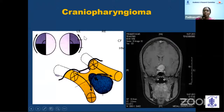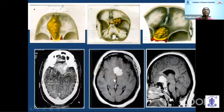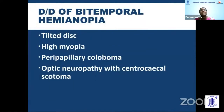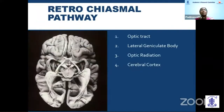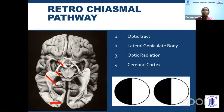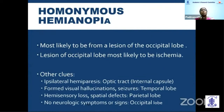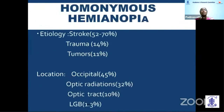Types of meningiomas causing visual field effects include olfactory meningioma, tuberculum sellae, and sphenoidal meningiomas, all causing bitemporal hemianopia. Differential diagnosis of bitemporal hemianopia includes tilted disc, high myopia, peripapillary coloboma, and optic neuropathy causing central scotoma — but none of these respect the vertical meridian and they remain static over time. The retrochiasmal pathway includes the optic tract, lateral geniculate body, optic radiation, and cerebral cortex, producing homonymous hemianopia. Clues to localize the lesion include visual hallucinations for temporal lobe and hemisensory loss or spatial defects for parietal lobe.